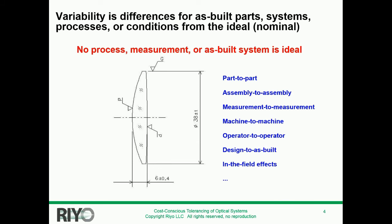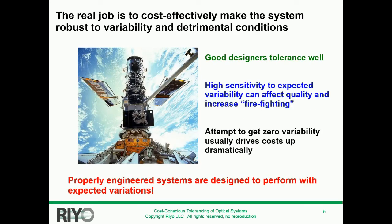You may also have field effects. So you had it in the lab, it worked great, you took it out into the field, and now it's not working. It might be because the environment wasn't properly taken into account, or it's operating in a way you didn't expect. All of that goes back to variability meaning it's not acting like the ideal. The real job of the engineer is to effectively make the system robust for this kind of variability.